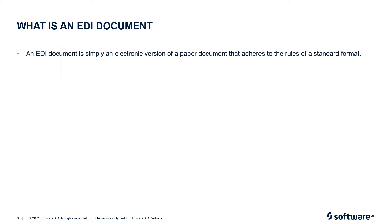Let us now understand what an EDI document is. An EDI document is simply an electronic version of a paper document that adheres to the rules of a standard format. When two companies use the same EDI standard format for their business documents, their computers speak the same language. This enables the exchange of documents between the computers without any human intervention.